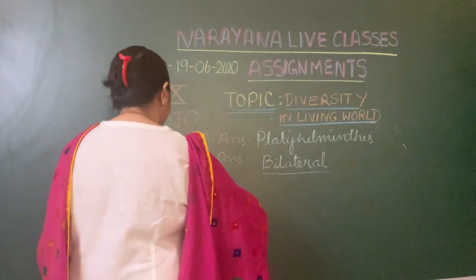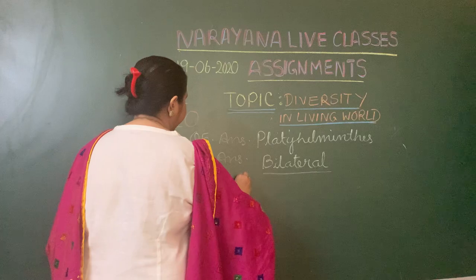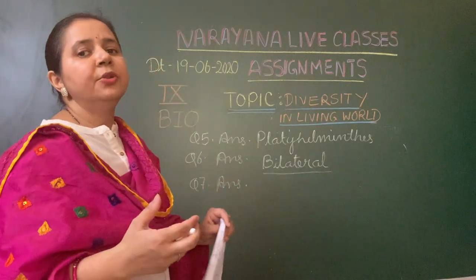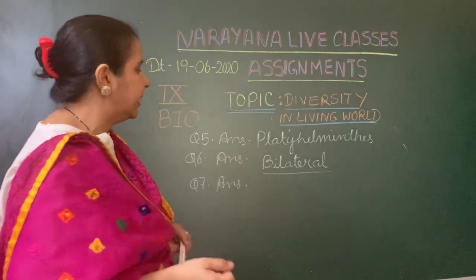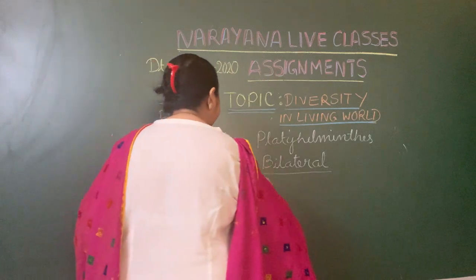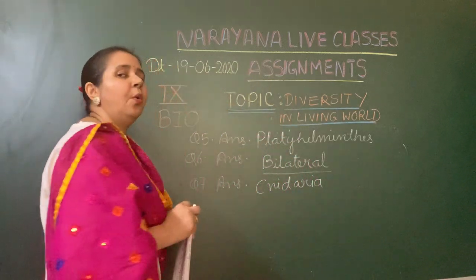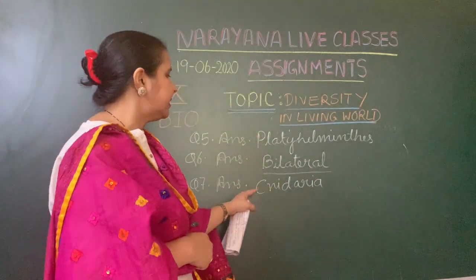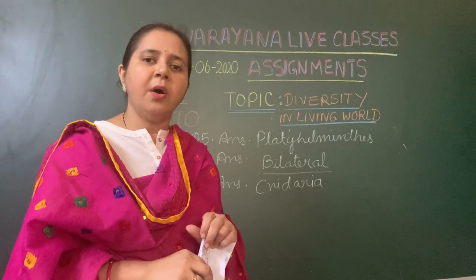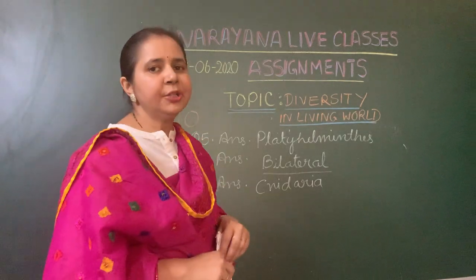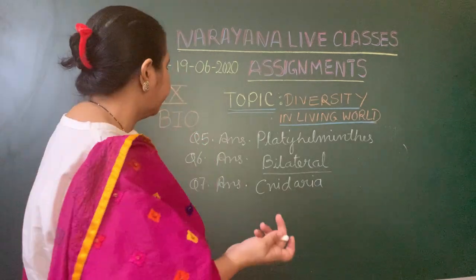Question number seven: name the phylum which shows the tissue level of organization. Tissue level means no organs are present — only tissues. The answer is Cnidaria. Cnidaria has only tissue level organization, meaning the body consists of tissues only; the tissues have not grouped together to form any specific organs. They have specialized tissues, the most special being nematoblasts or nematocytes, used for catching prey.